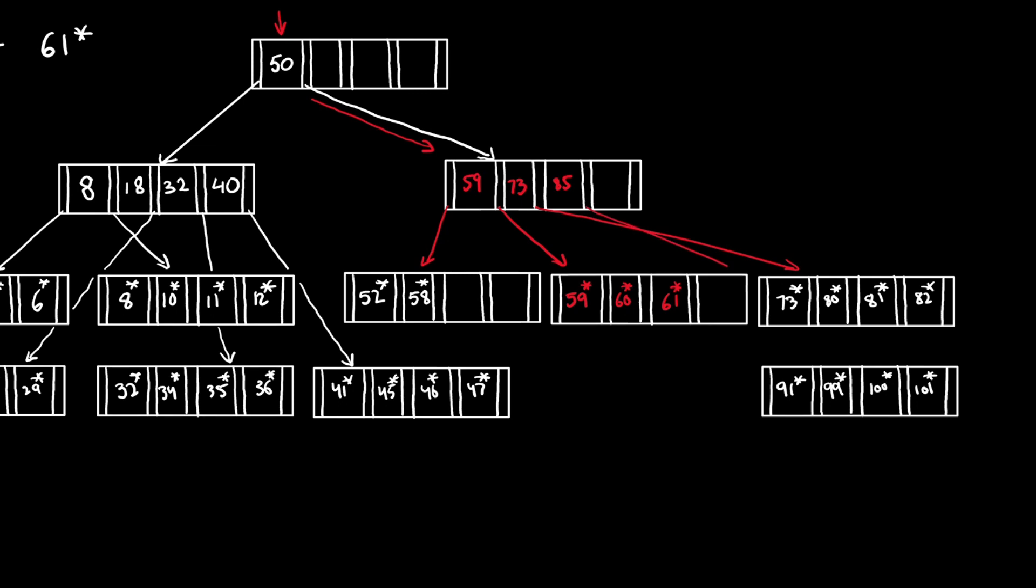We need to check if the tree is balanced. As all entries are more than half full, this tree is balanced. Now, the insertion is complete.